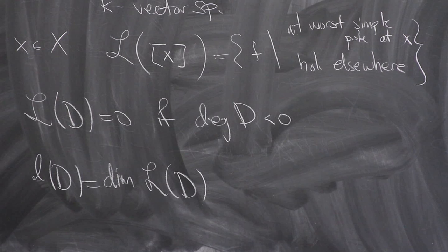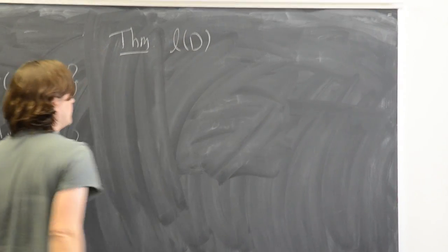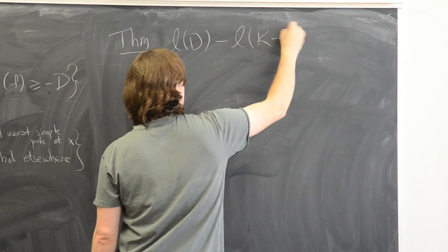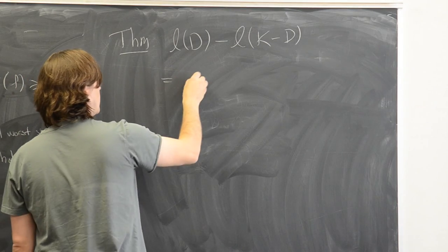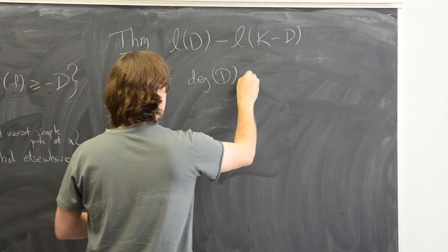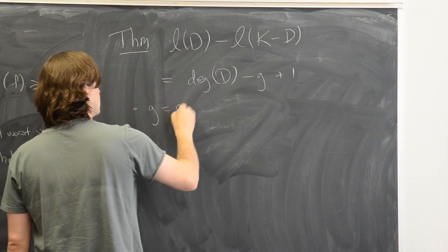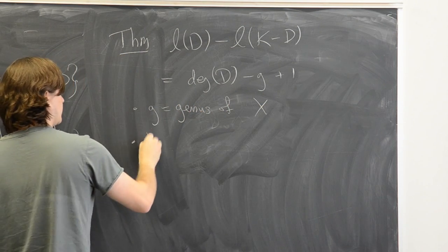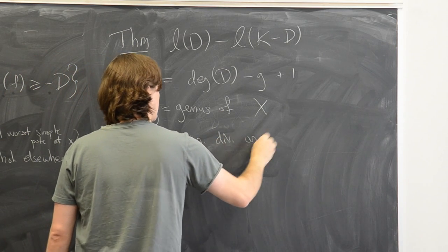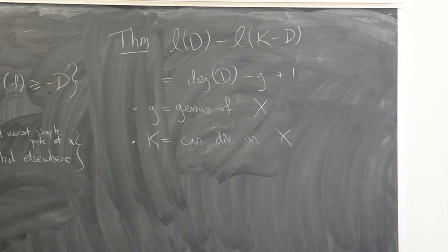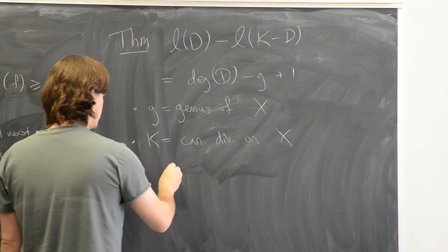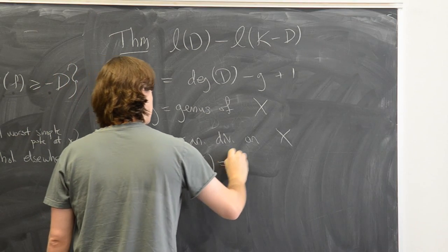Now I can state the Riemann-Roch theorem: the dimension l(D) minus the dimension l(K minus D) equals the degree of D minus the genus g plus one. Here g is the genus of our curve and K is the canonical divisor on X, defined as the divisor of a non-zero meromorphic differential. The important thing we need to know is that the degree of the canonical divisor is 2g minus 2.